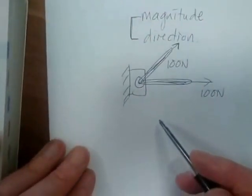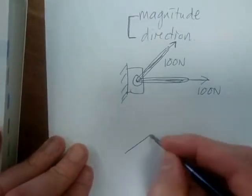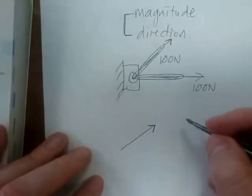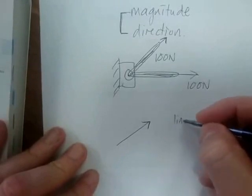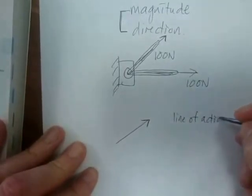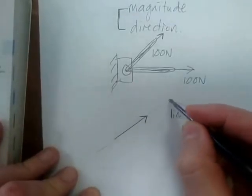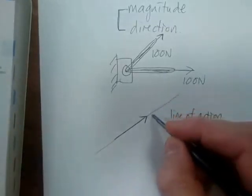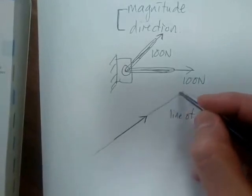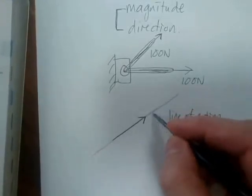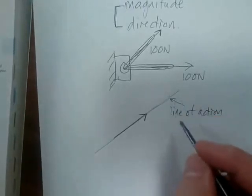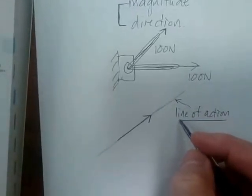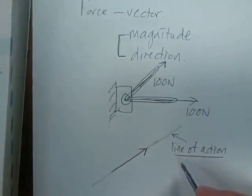Now, just some important terms. If we have a force vector here, one important term which I want you to pick up — which we will use quite a bit later — is something called the line of action. The line of action is simply the line along which the force vector is acting. There is this line that's acting to infinity on both sides through this force vector — that's called the line of action. This becomes very, very important later on, so please study this, understand it, and remember it.